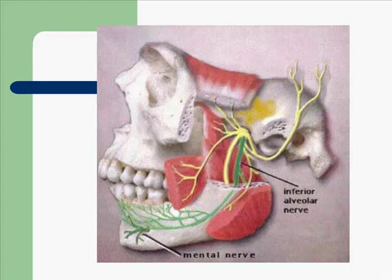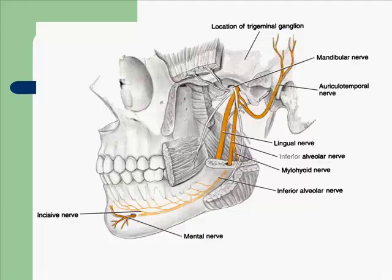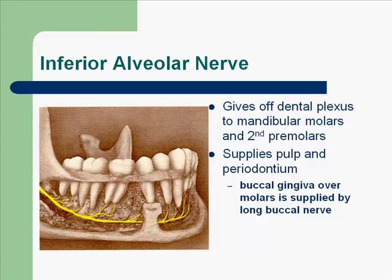The mental nerve exits the mental foramen and supplies the chin area and soft tissue. When a nerve exits a foramen it supplies soft tissue; when a nerve enters a foramen, as the IA nerve does at the mandibular foramen, it supplies pulp, bone, and periodontal structures. The IA nerve gives off a dental plexus to the mandibular molars and second premolars, supplying the pulp and periodontium. The buccal gingiva over the molars is supplied by the long buccal nerve.